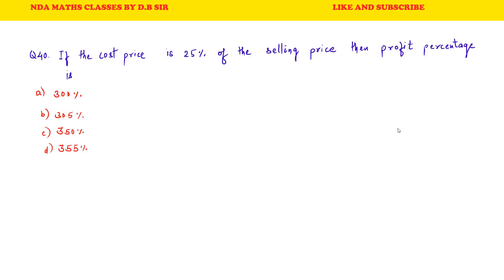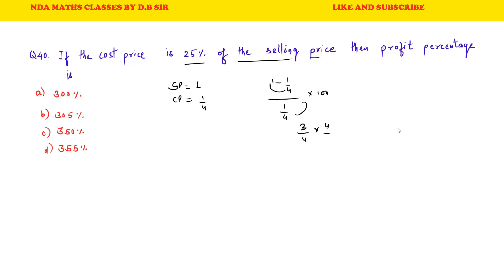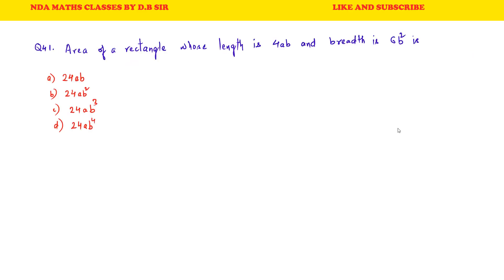Question 40: If the cost price is 25% of the selling price, then what is the profit percentage? If selling price is 1, cost price is 25% of 1, that is 1 upon 4. So profit percent = (SP − CP) upon CP into 100 = (1 − 1/4) upon (1/4) into 100 = (3/4) × (4/1) × 100 = 300%. So A is the correct answer.